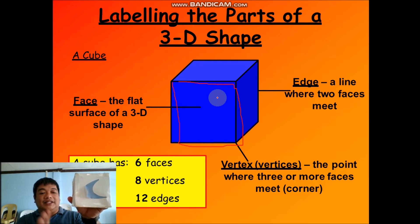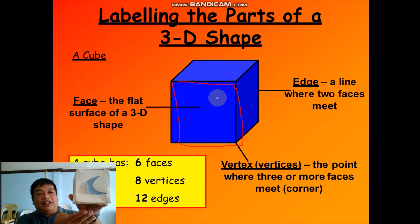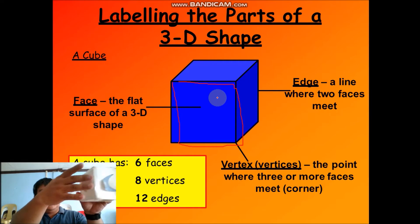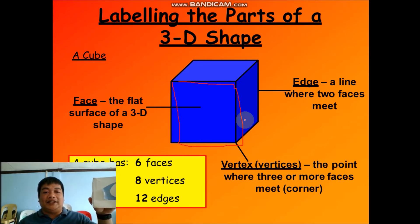So lateral faces are the faces that are joined by the base face. The bottom face is what we call the base. The faces that join the base are what we call the lateral faces. In a cube, how many lateral faces are there? We have here one, two, three, and at the back, four. So there are four lateral faces.